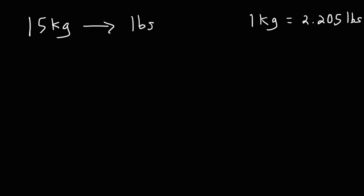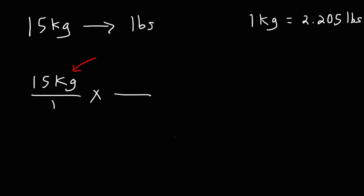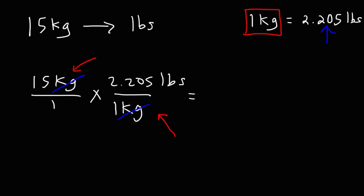Let's convert 15 kilograms to pounds. Step one is to write down what you're given on a fraction. Step two, write another fraction. Using your conversion factor, you need to decide what goes on the bottom and what goes on top. Notice that we have kilograms on the top part of the first fraction, so we put that same unit on the bottom of the second fraction so the units cancel. The other part goes on top. So it's 15 times 2.205, and the answer is 33.075 pounds.